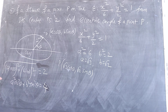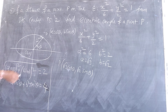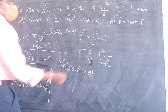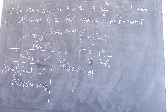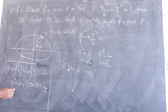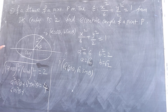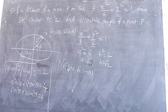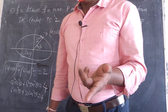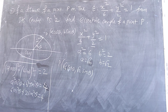Simplifying 6cos²θ + 2sin²θ = 4: replace sin²θ with (1 − cos²θ) to get 6cos²θ + 2 − 2cos²θ = 4, so 4cos²θ = 2, giving cos²θ = 1/2, and cosθ = ±1/√2. The eccentric angle θ lies in [0, 2π], so the solutions are θ = π/4, 3π/4, 5π/4, and 7π/4.